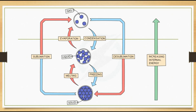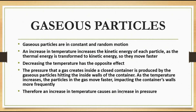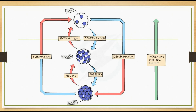Here is a diagrammatic summary of all the state changes we discussed. You can see clearly the solids, liquids and gases, and all the state changes: melting is solid to liquid, evaporation is liquid to gas, condensation is gas to liquid, freezing is liquid to solid, sublimation is solid to gas, and desublimation or deposition is gas to solid. As we go from solid to liquid to gas, we are increasing the internal energy. As we go back in the reverse direction, we are decreasing the internal energy.